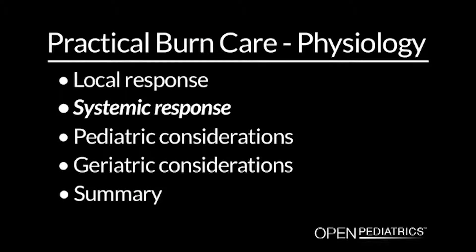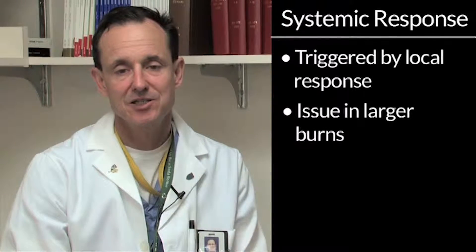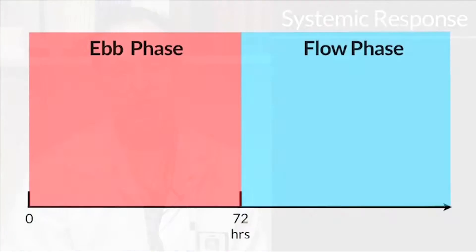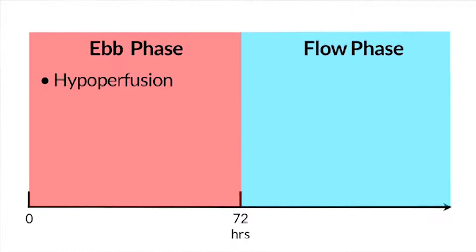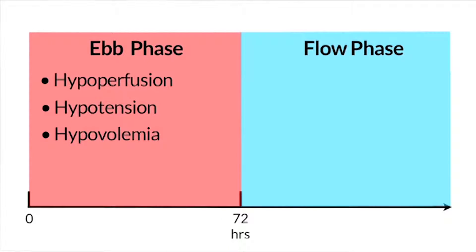Systemic response. As the burns get bigger, the local response triggers a systemic response that can become an increasing issue. This was initially well described by Cuthbertson, a Scottish nutritionist. He used the phrases ebb and flow phases — the ebb phase, referring to the tide, being a period of hypoperfusion and hypotension related to hypovolemia as fluid is lost through the wounds. We obscure this nowadays with the fluid we administer intravenously, so the ebb phase is not quite as dramatic when fluid resuscitation is performed.